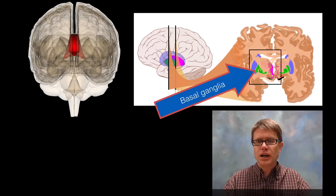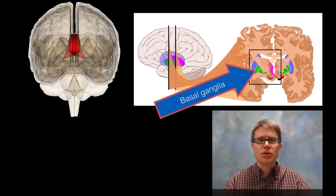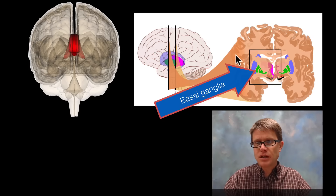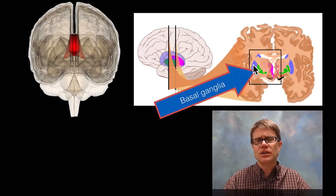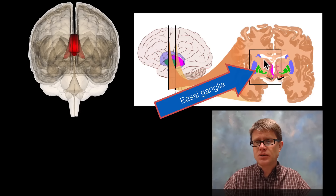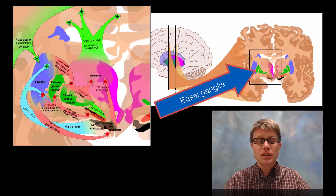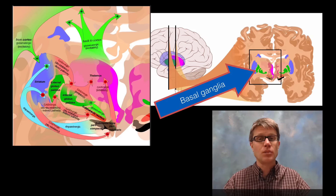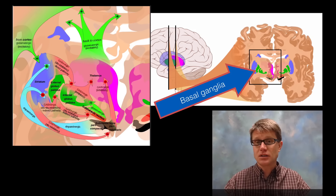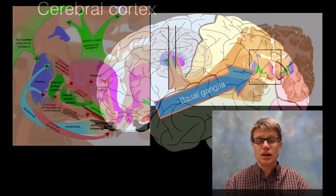Right below the corpus callosum is an area called the basal ganglia, made up of a bunch of nuclei. A nucleus in the brain is basically a cluster of neurons right next to each other that have the same function. All of these nuclei together make up the basal ganglia, which sits below the cerebral cortex. Scientists have worked out a complex interaction of inhibition and excitatory responses between these neurons — it controls a lot of our motor control. If someone has Parkinson's disease, we're seeing problems in this basal ganglia area.